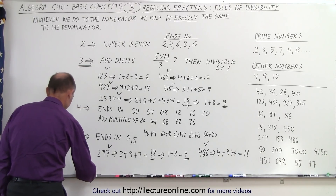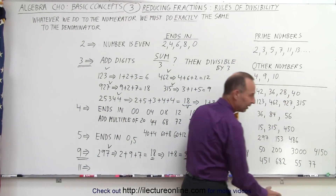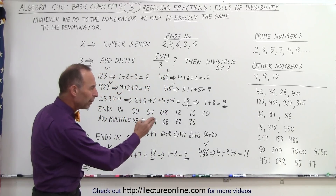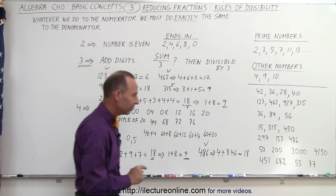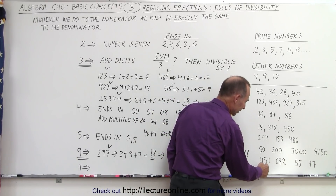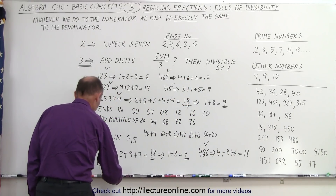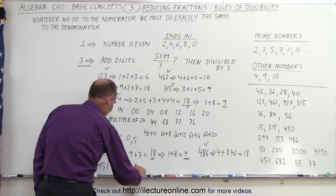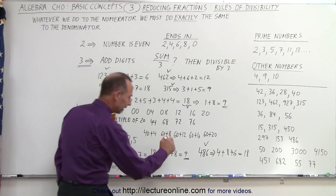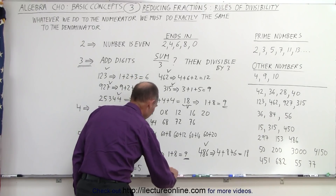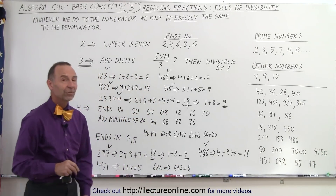The number 11 is kind of interesting. If there are only two digits, they have to be the same — like 55 and 77. But for a three-digit number like 451 or 682, if you take the first and last digits and add them together and get the middle digit, then the number is divisible by 11. For example, in 451: 4 plus 1 equals 5, which is the middle digit, so 451 is divisible by 11. For 682: 6 plus 2 equals 8, the middle digit, so 682 is also divisible by 11.